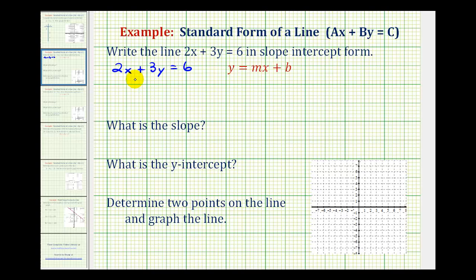To do this, the first step is to move the x term to the right side of the equation. So we'll have to subtract 2x on both sides of the equation. This would be zero, we'd have 3y equals, I'm going to go ahead and put the x term first and the constant second to match the slope-intercept form.